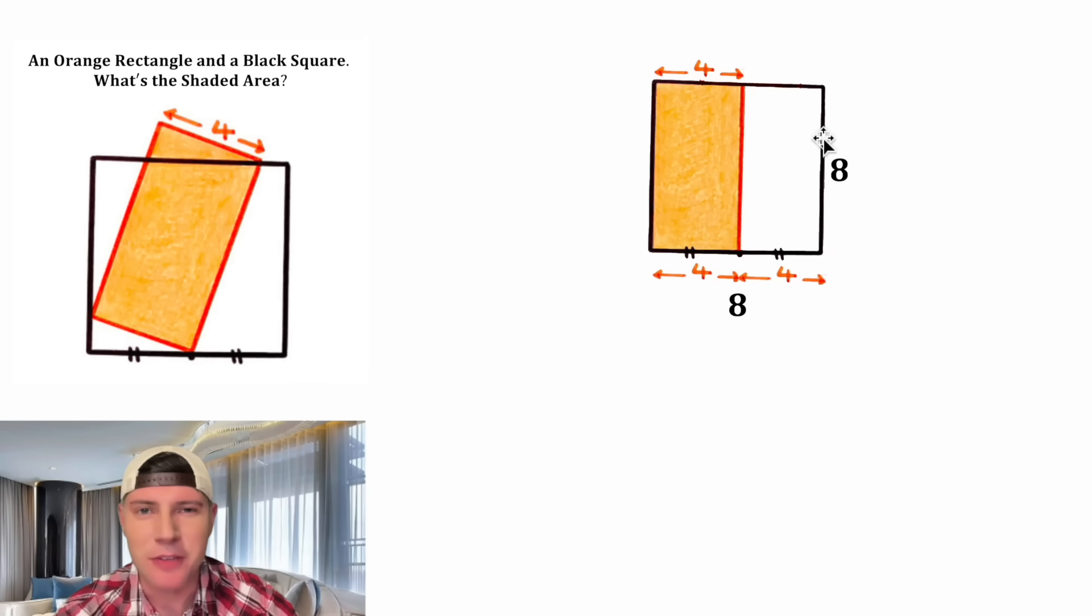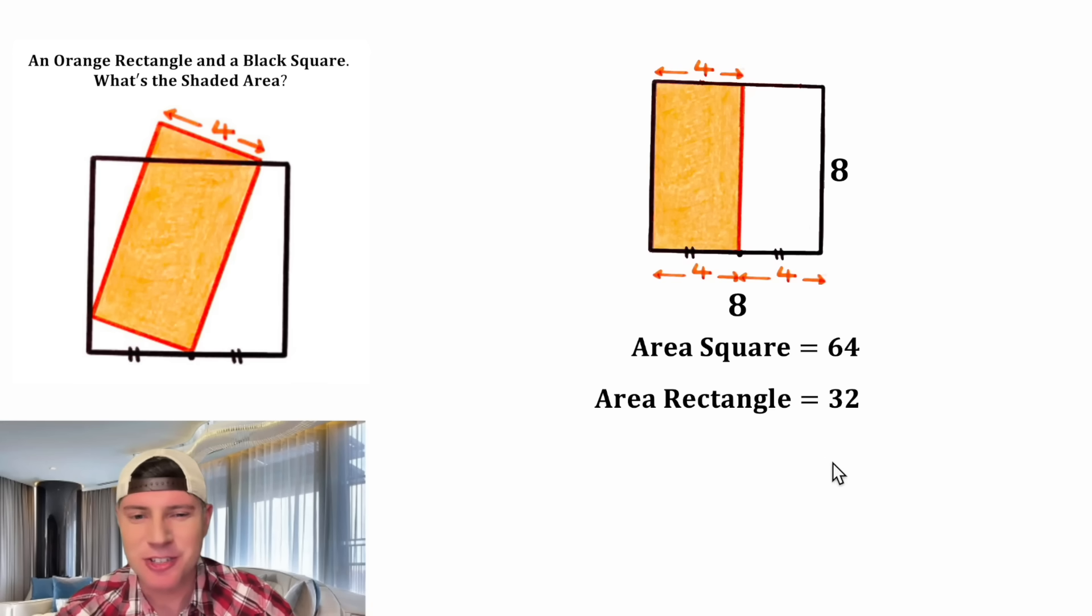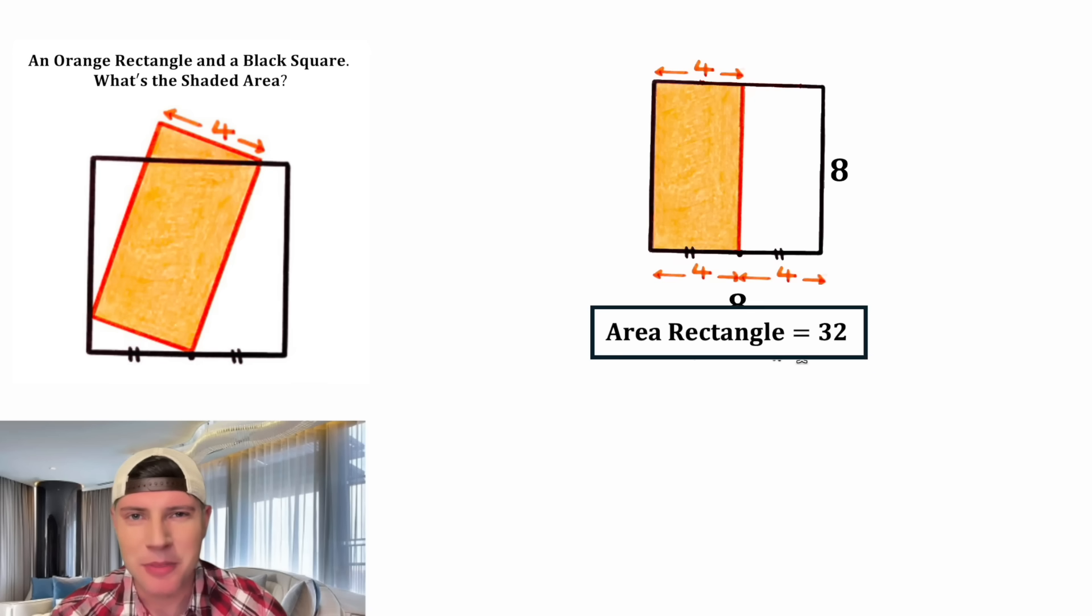And then since it's a square, the height is also equal to eight. Now that we know the base and the height of the square are eight, we know the area is equal to 64. And then the area of this rectangle is going to be exactly half, so it's equal to 32. And now we have the answer to our question. Let's put a box around it. So if you're taking a test where you didn't have to show your work, this is probably the best way to solve it.